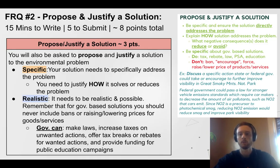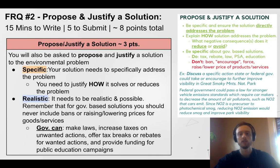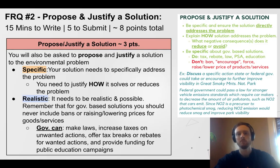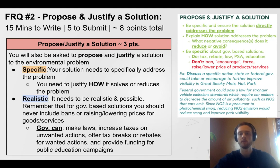Remember that you have to be really specific. Explain how your solution alleviates or avoids some negative consequences. Don't say the government should ban something or just vaguely encourage something — it's too vague. Use a specific tax code change, an actual law, or say the government can fund a public education campaign. Those are the realistic, specific government-based solutions that will earn you credit.